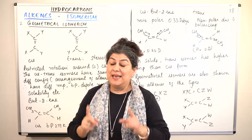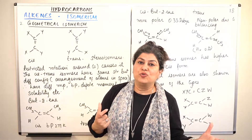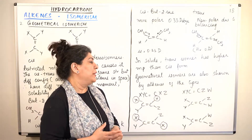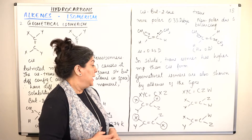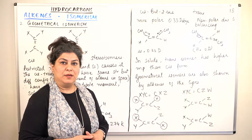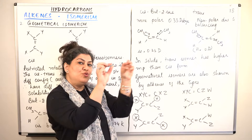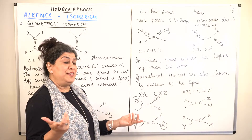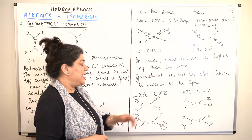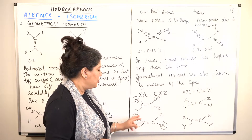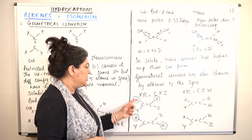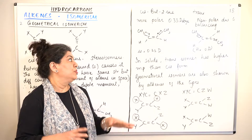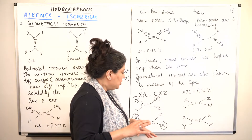Even if all four groups attached to the doubly-bonded carbons are different — x, y on one carbon and z, w on the other — cis-trans isomerism is still shown. However, if any one carbon has two identical groups attached to it, then that molecule will not show cis-trans isomerism. This is because swapping the identical groups does not produce a new isomer — it gives back the same molecule.